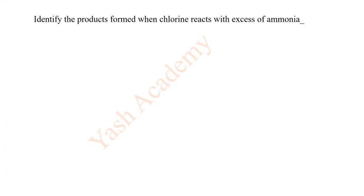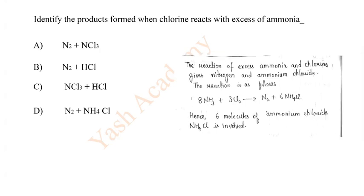Identify the products formed when chlorine reacts with excess of ammonia. Options: A N2 + NCl3, B N2 + HCl, C NCl3 + HCl, D N2 + NH4Cl. So here D option is the correct.